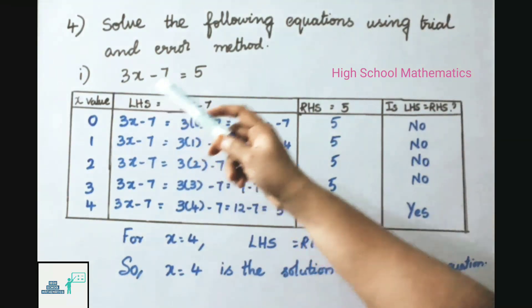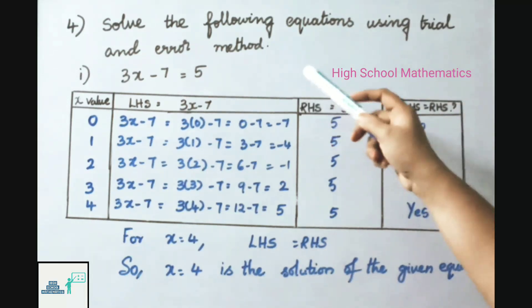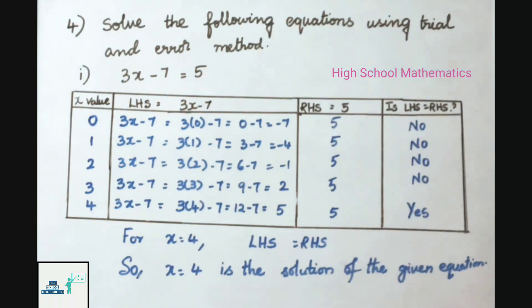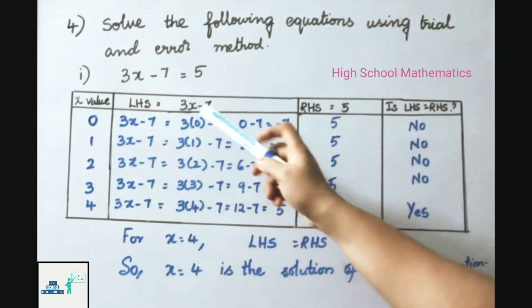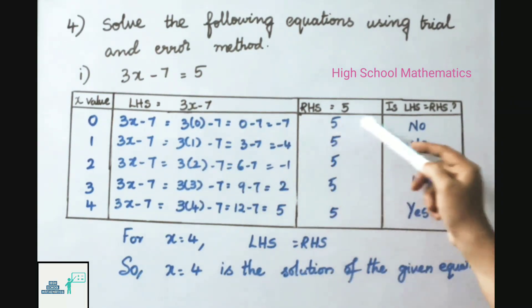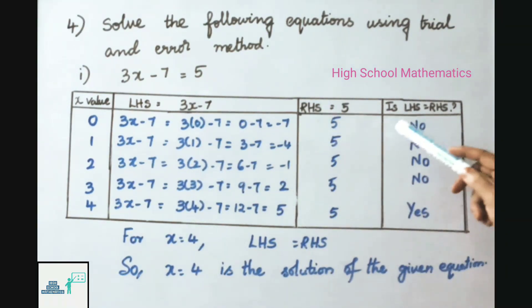Question 4: solve the following equations using trial and error method. First sum: 3x − 7 = 5. We use a tabular form with columns: x value, LHS = 3x − 7, RHS = 5, and whether LHS equals RHS or not.